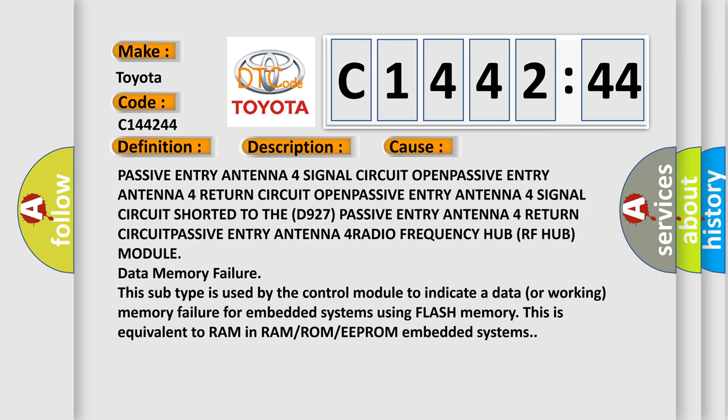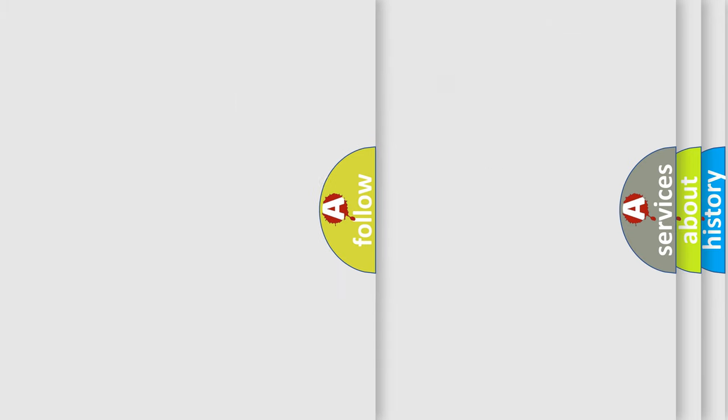This diagnostic error occurs most often in these cases: Passive Entry Antenna 4 signal circuit open, Passive Entry Antenna 4 return circuit open, Passive Entry Antenna 4 signal circuit shorted to the D927 Passive Entry Antenna 4 return circuit, Passive Entry Antenna 4 Radio Frequency Hub RF Hub module data memory failure. This subtype is used by the control module to indicate a data or working memory failure for embedded systems using flash memory. This is equivalent to RAM in RAM or ROM or EEPROM embedded systems.